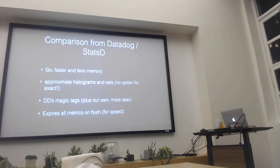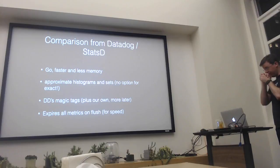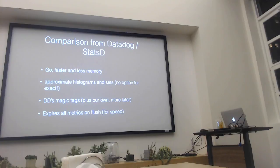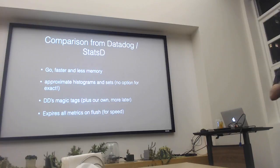Here are some things we got out of it. Veneur now does exist. Veneur is in production at Stripe running everything, basically. There are a few other companies evaluating it. It was written in Go — we find it to be very fast and to consume relatively small amounts of memory and CPU. Because we were dealing with a situation where you have a lot of requests happening — tens of thousands, hundreds of thousands, millions of requests per second — that's a lot of timers to keep to build a histogram. You have to keep every one of them if you want this to work. So we decided to go for approximate histograms and also approximate sets.